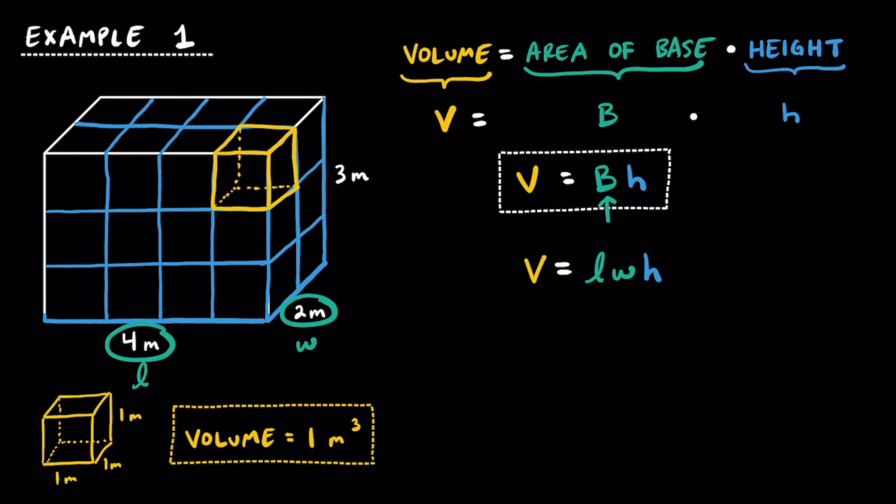Now, if the base was a different shape than a rectangle, like maybe a triangle or a trapezoid, we would need a different formula to find the area of that base. But since we're dealing with a rectangular prism, we can just use length times width for the rectangle. Substituting in 4 meters, 2 meters, and 3 meters in for the variables, we can find that 4 times 2 gets us the area of the base, which is going to be 8 meters squared, and multiplying that by 3 meters, or the height, we get a volume of 24 cubic meters.